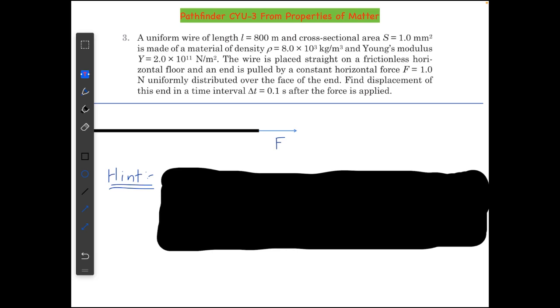So let's look at the question first. A uniform wire of length l = 800 meters and cross-sectional area S = 1 mm² is made of a material of density ρ = 8 × 10³ kg/m³ and Young's modulus Y equals